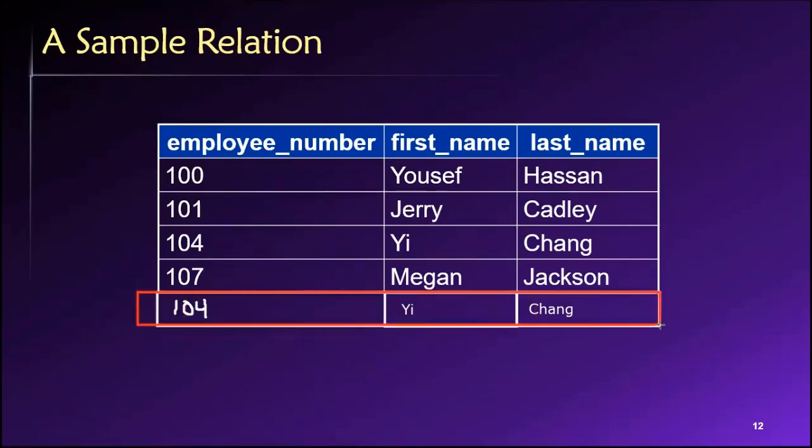Now doing something like this 104 would not be allowed because again, we're not allowed to have duplicate rows. And in this case, this row here with an employee ID number of 104 and the employee's name Yi Chang is exactly the same as this row here. So that's not allowed. We can't do that.